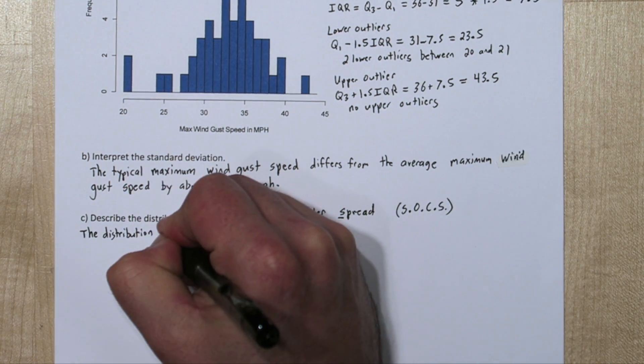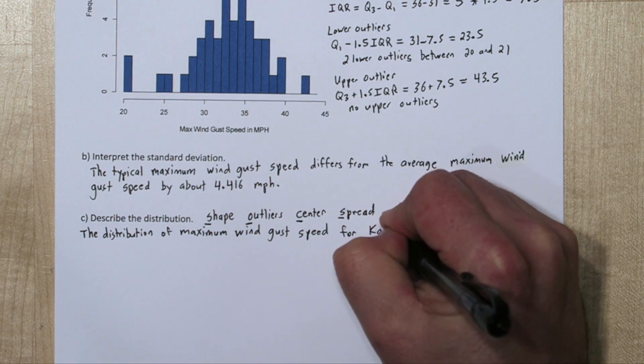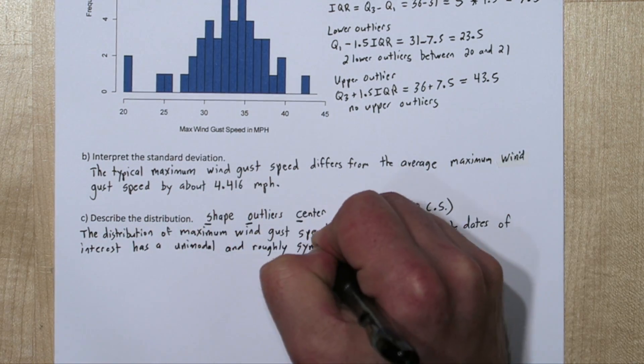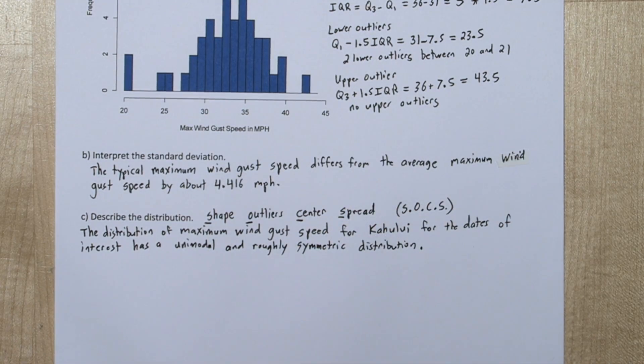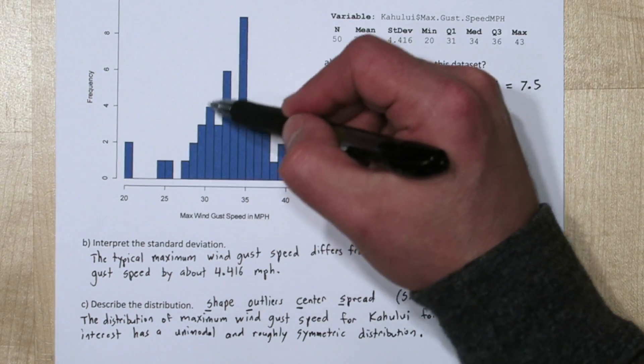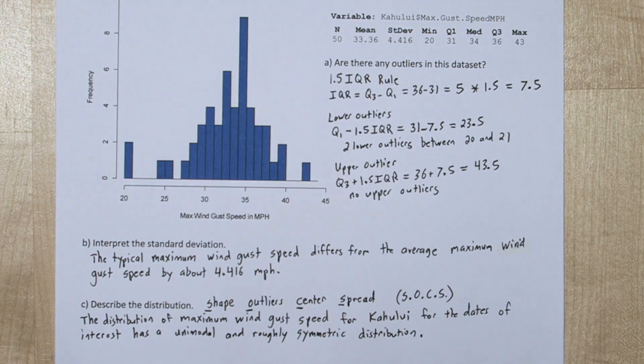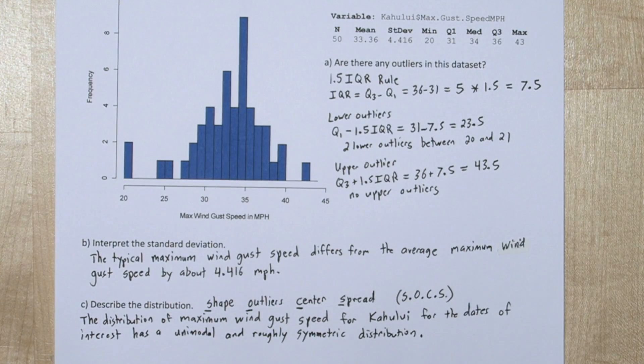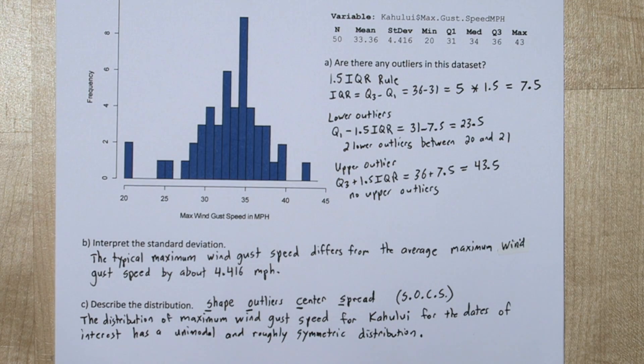Let's start with the shape. We said the distribution of the maximum wind gust speed for Kahului, for the dates of interest, has a unimodal and roughly symmetric distribution. So unimodal means it has one peak, which it does, and roughly symmetric means if you were to put a line of symmetry in the middle it kind of reflects on itself. And I think that fits this distribution.